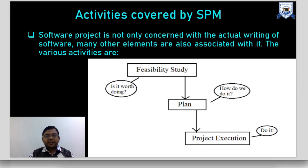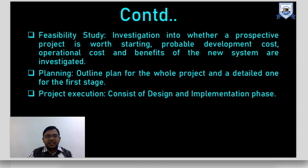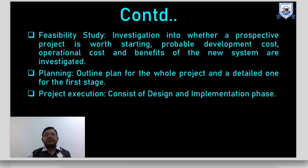Activities covered by SPM at a broad level are feasibility, planning, and project execution. A software project is not only concerned with the actual writing of software — many other elements are associated. Feasibility study investigates whether a prospective project is worth starting, the probable development cost, whether technical resources are available, and the operational costs and benefits of the new system.